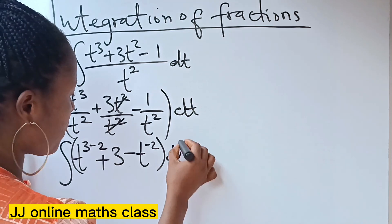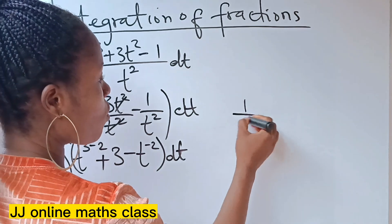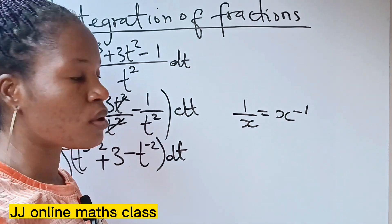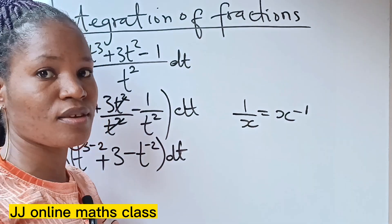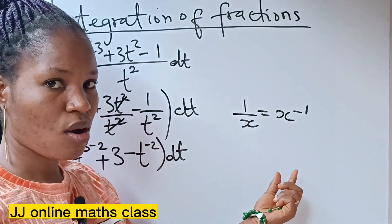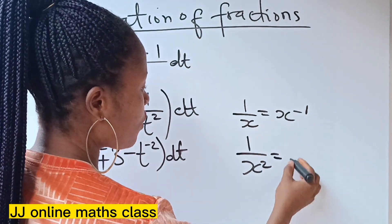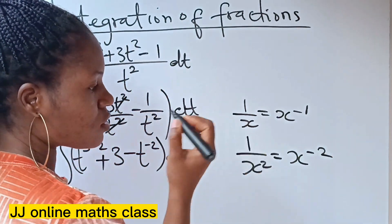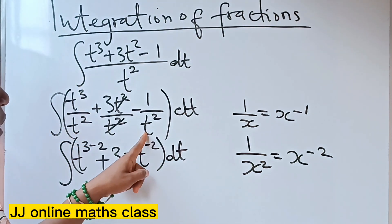Let me explain. According to indices, if you have 1 over x, that is equal to x to the power of minus 1. If you want to remove your 1 over x, you introduce a negative sign to the power of x. In the same way, if we have 1 over x squared, it is x to the power of minus 2, because the power of x here is 2. So similarly, that is exactly what I did — this becomes t to the power of minus 2.